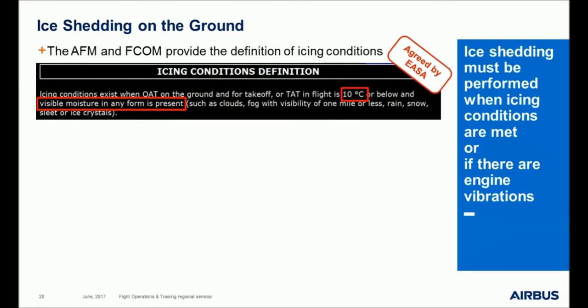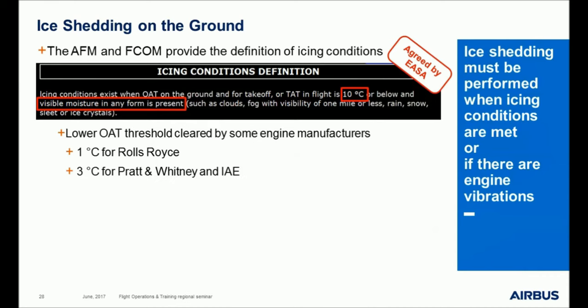Ice-shedding must be performed when icing conditions are met or if engine vibrations are experienced. The AFM and FCOM provide the definition of icing conditions: basically, OAT at or below 10°C with visible moisture in any form, either in the air or on the ground. The OAT threshold of 10°C is an envelope value, and some engine manufacturers authorize a lower threshold — 1°C for Rolls-Royce, and 3°C for Pratt & Whitney and IAE. Freezing fog is a particular case of icing conditions, announced by weather reports and ATC, with a dedicated procedure available for Rolls-Royce engines.